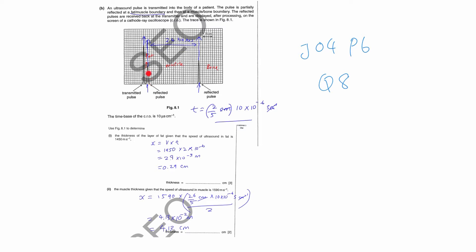The fat-muscle boundary means this side is fat and this side is muscle. To find the thickness of the layer of fat, let's find the time that it takes to travel through fat. We find the time from this peak to this peak, because this is supposedly entering the skin and this is the one that is reaching the fat-muscle boundary.